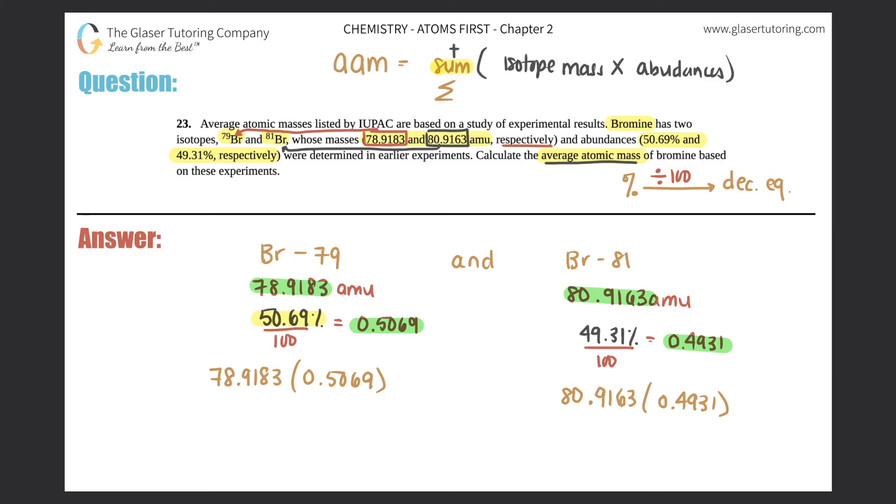So 78.9183 times 0.5069, and we should have four sig figs here. So this should be 40.00. And then 80.9163 times 0.4931, we also should have four sig figs.